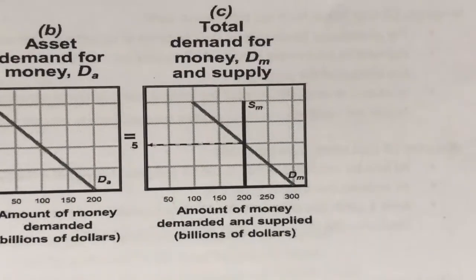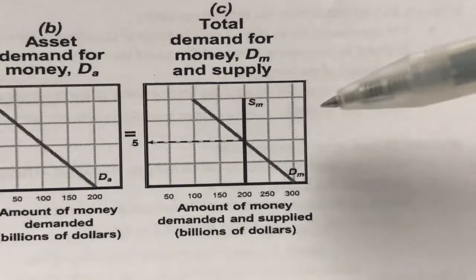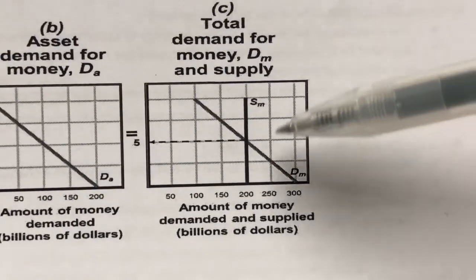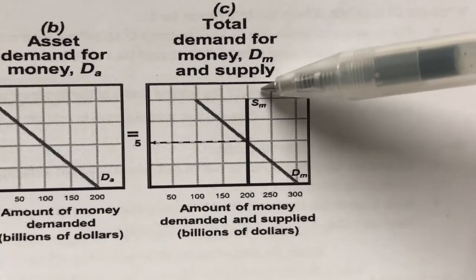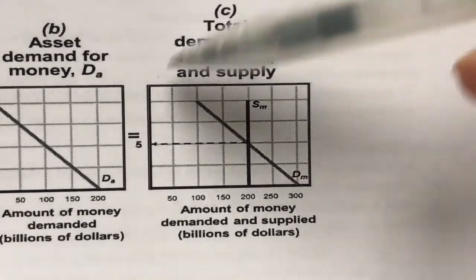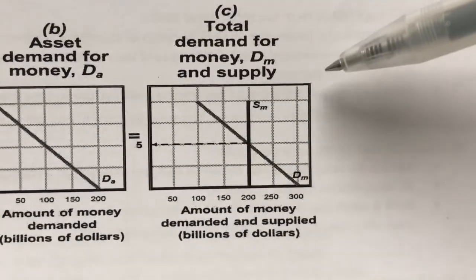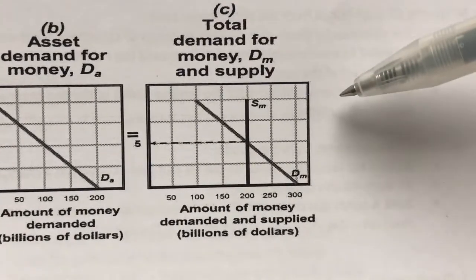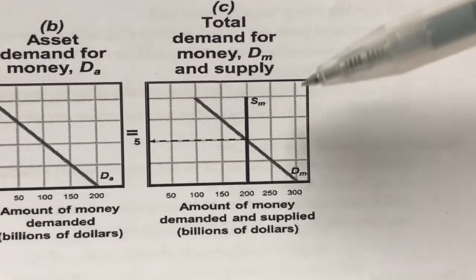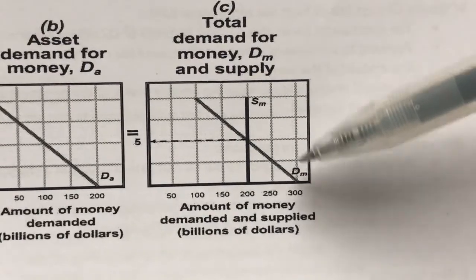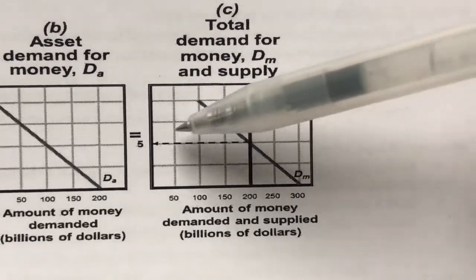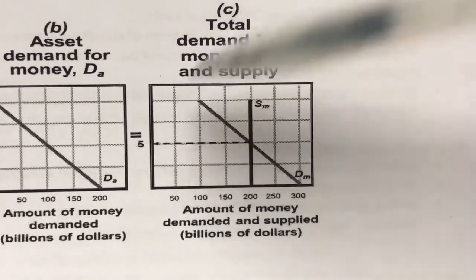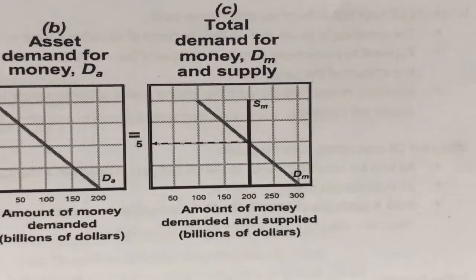Now that we have the total demand for money, we can combine it together with the supply of money. This becomes the complete money market. The point at which the demand and supply of money intersects gives us the equilibrium interest rate, or the price of money.